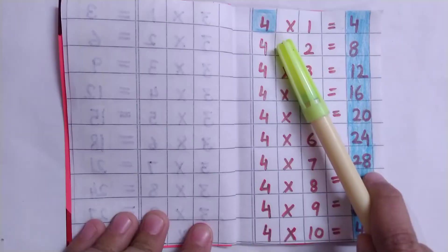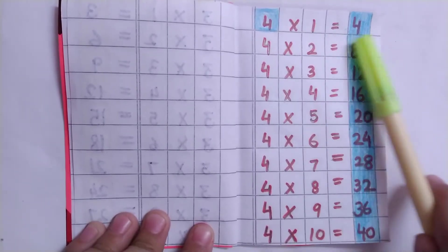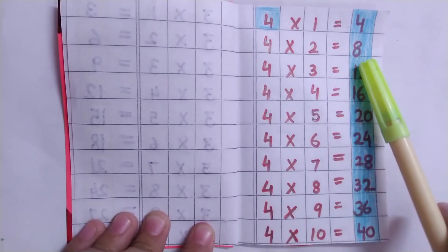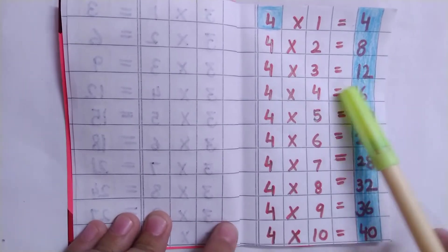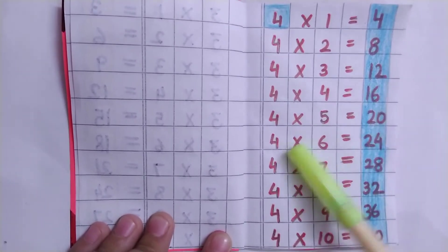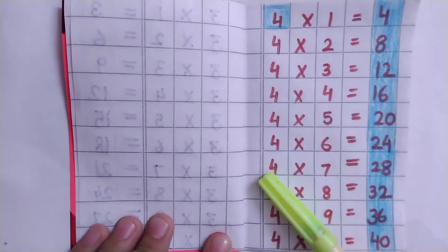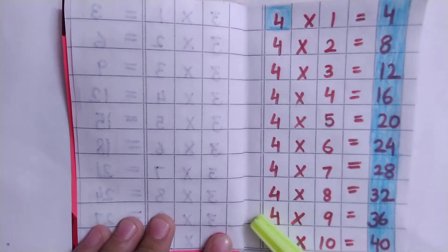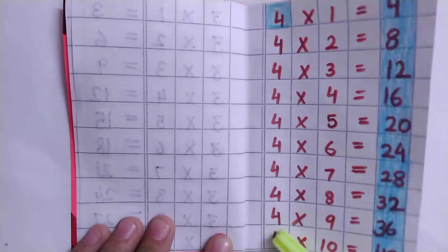Table of 4: 4×1=4, 4×2=8, 4×3=12, 4×4=16, 4×5=20, 4×6=24, 4×7=28, 4×8=32, 4×9=36, 4×10=40.